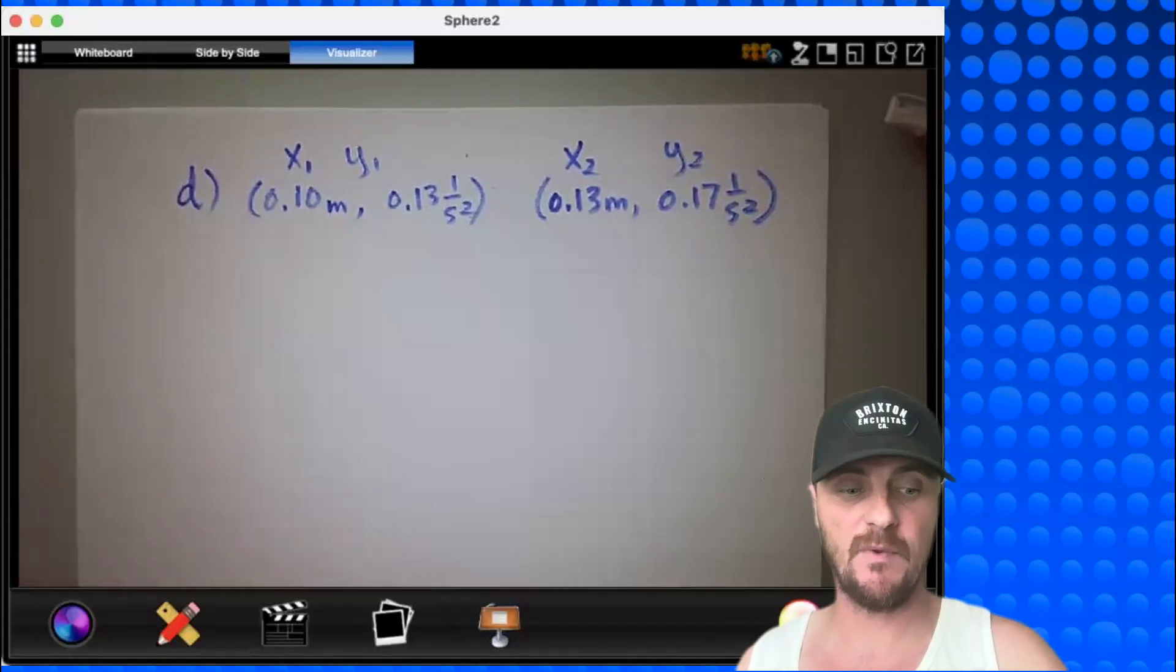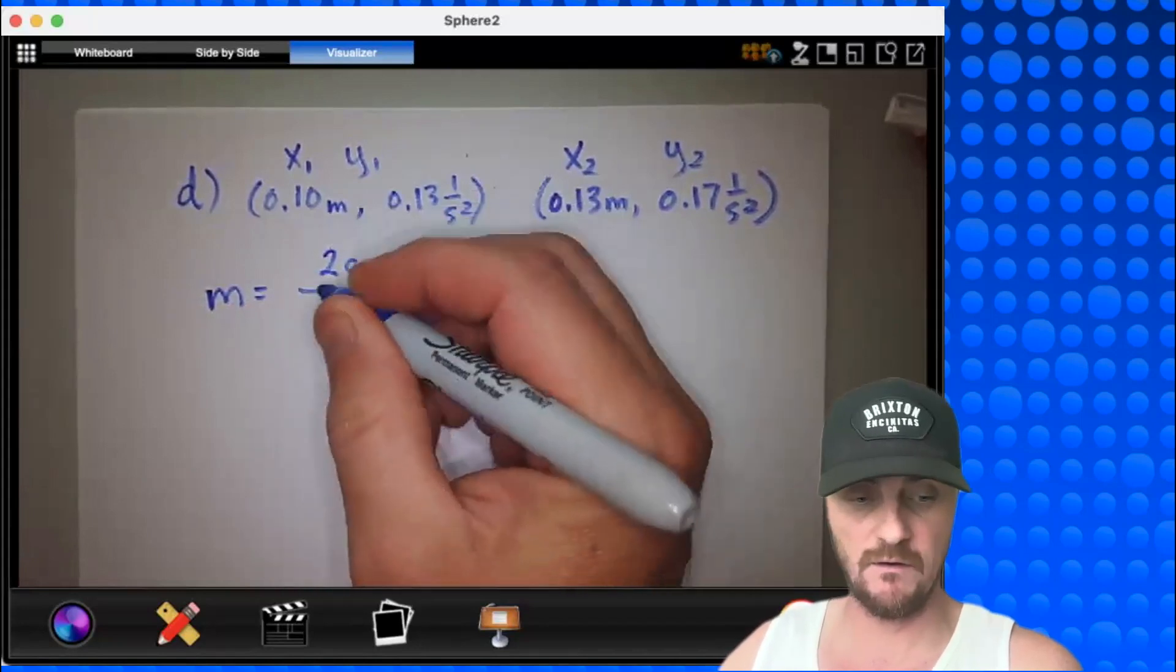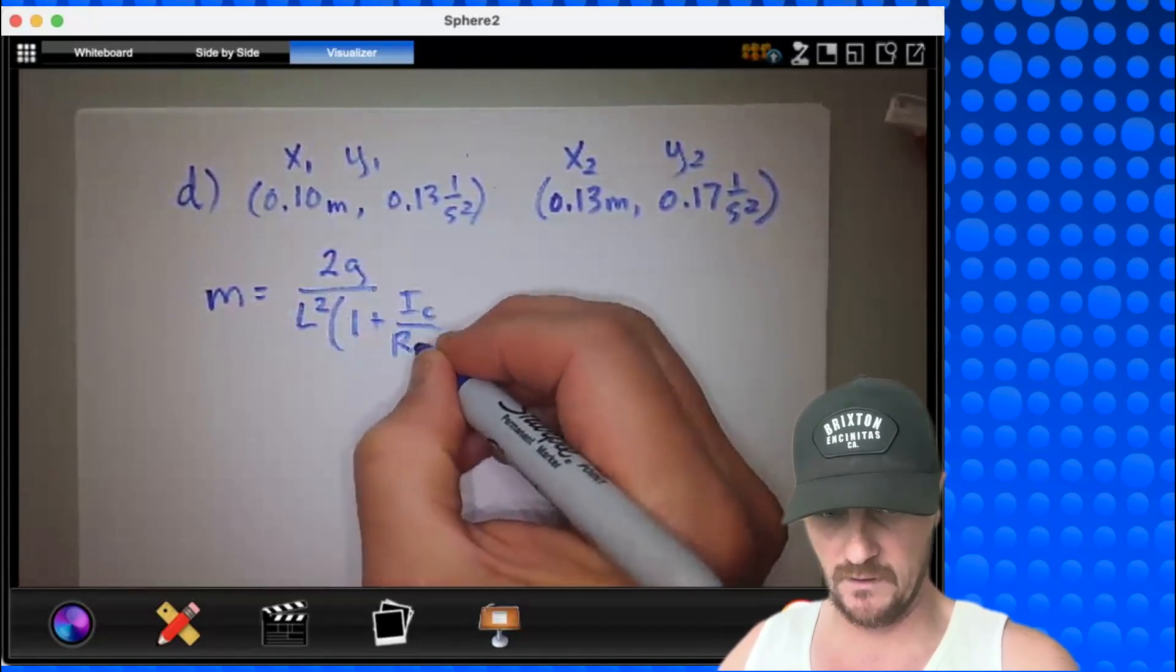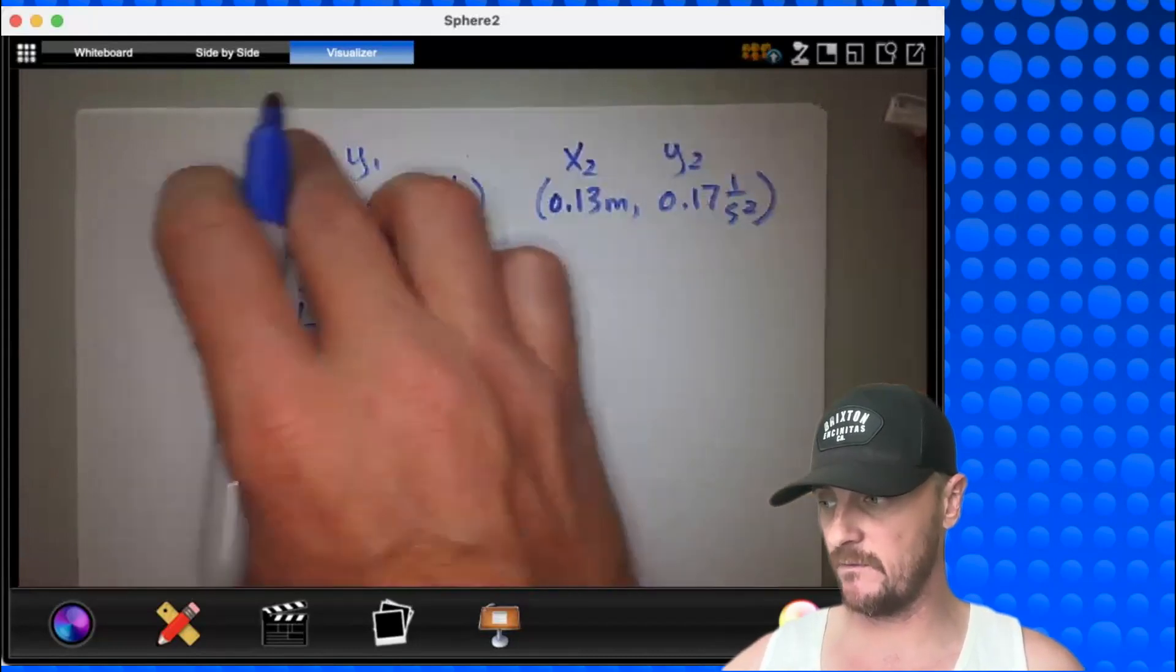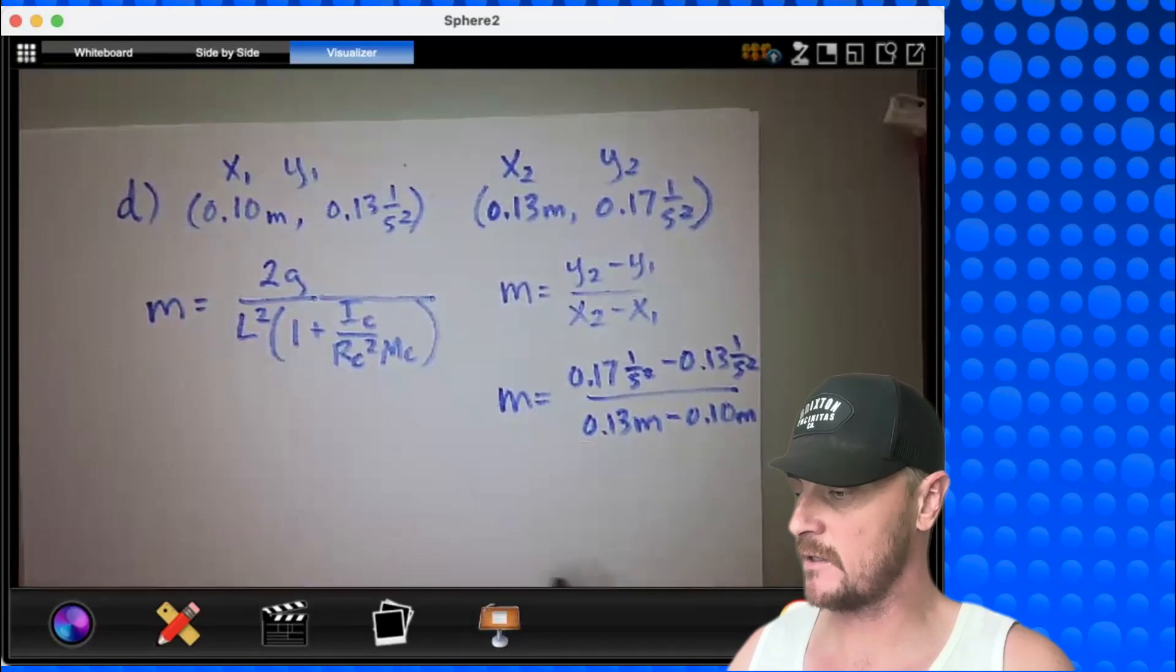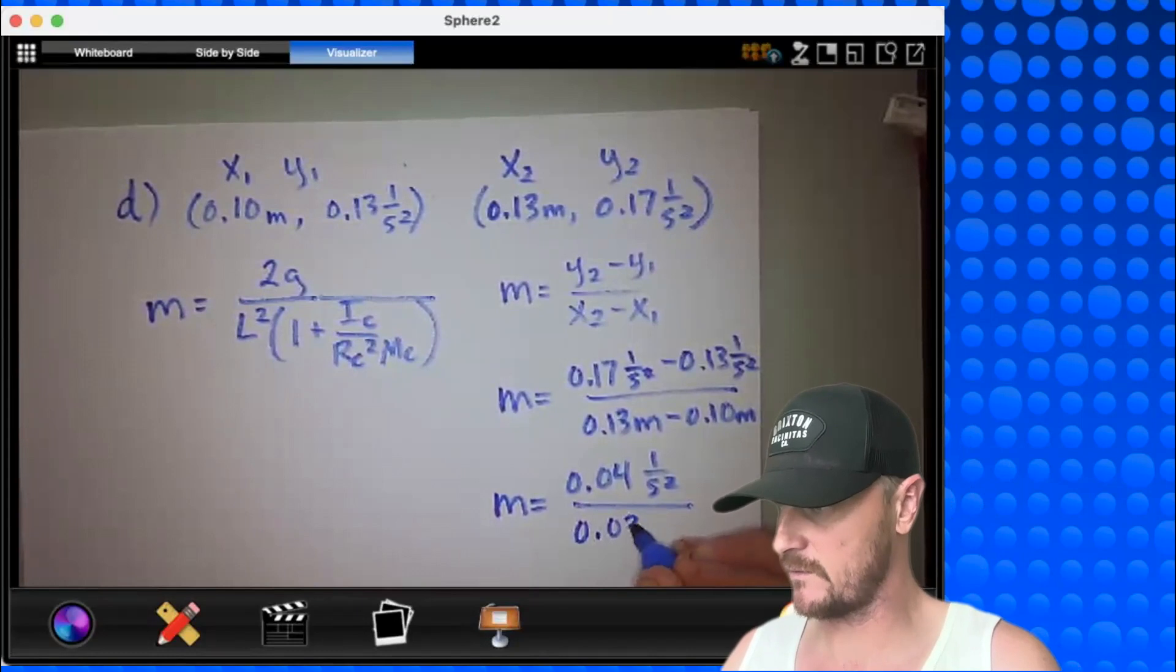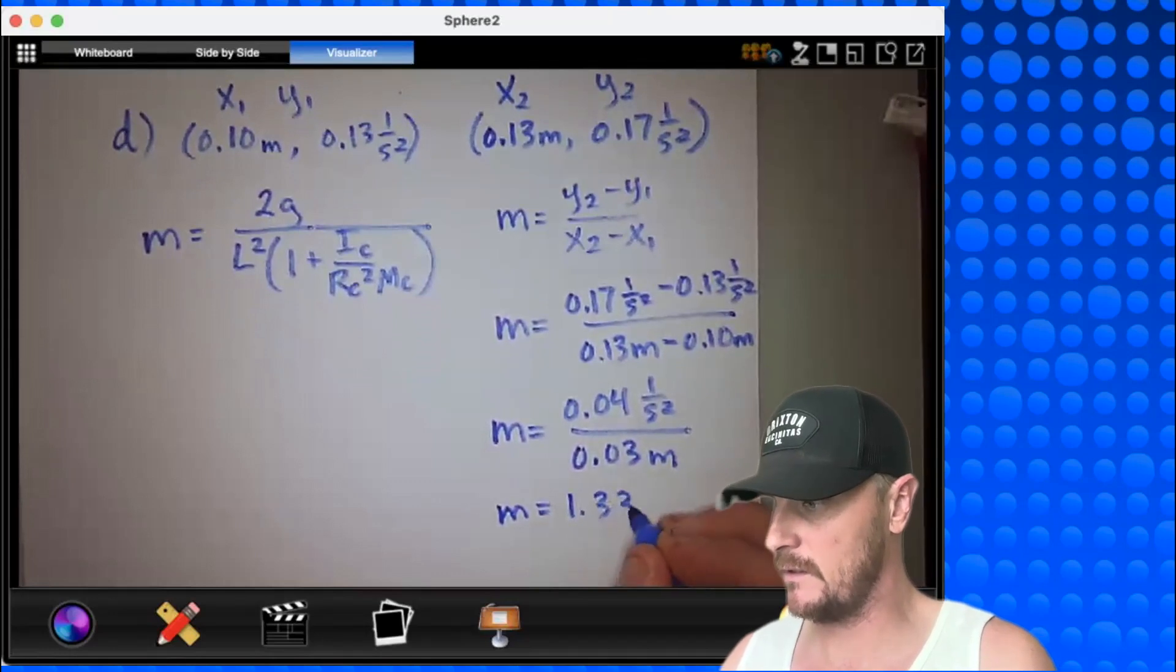Alright, we're on the home stretch. And remember what I have from my slope. My slope m from my previous expression was 2g over l squared times the quantity 1 plus ic over rc squared mc. That's my slope. So all I need to do now is calculate my slope from this stuff, plug it in there, and then isolate i sub c. So let's do that right now. There's my general slope equation. Let's check out the plug-ins. There's my plug-ins which reduces to 0.04 1 over s squared over 0.03 meters. Dividing those two, I get a slope of 1.33 1 over meter second squared.